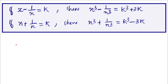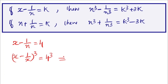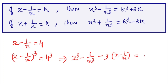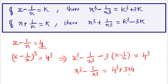I will show you an example. Here x minus 1 by x is 4. If I cube it — that is, x minus 1 by x, the whole cube, equals 4 cubed — and if I elaborate it: x cubed minus 1 by x cubed minus 3 into x minus 1 by x equals 4 cubed. So x cubed minus 1 by x cubed is 4 cubed plus 3 into x minus 1 by x, which we already said is 4, so 3 into 4. This equals k cubed plus 3k. So if x minus 1 by x is k, then x cubed minus 1 by x cubed is equal to k cubed plus 3k.